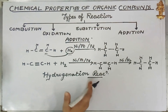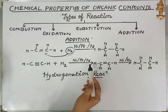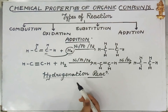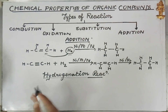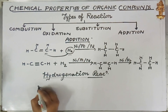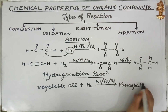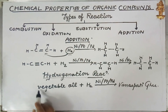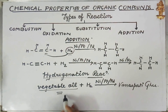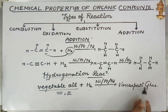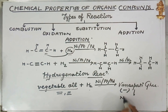The hydrogenation reaction takes place in the presence of nickel, platinum, and palladium. It is very important for industrial purposes as well — it converts vegetable oil into vanaspati ghee. Vegetable oils contain double or triple bonds, and when hydrogen is added in the presence of nickel or palladium, they are converted into vanaspati ghee, which is a saturated compound. Vanaspati ghee is not good for health.